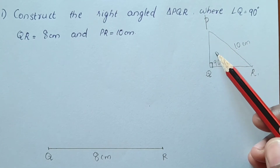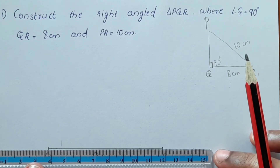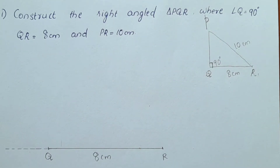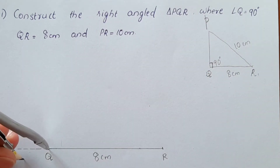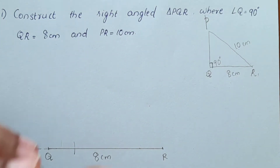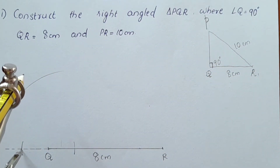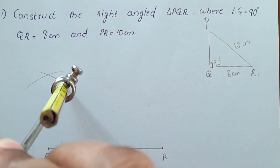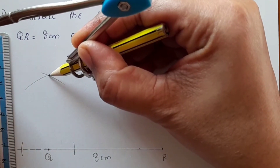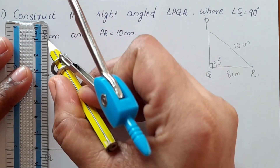We have a right angle. If you have a protractor, I will show you in the introduction video. Q is center. We are going to draw two arcs — this will go here. Let's put two arcs on both sides, put a point here.